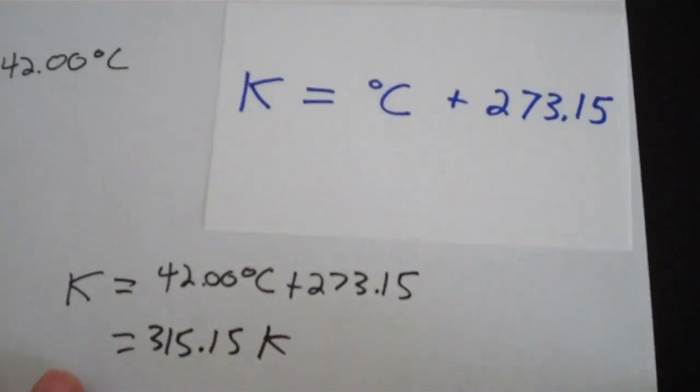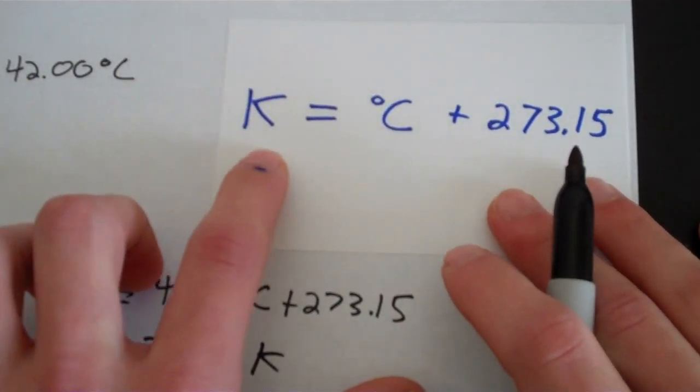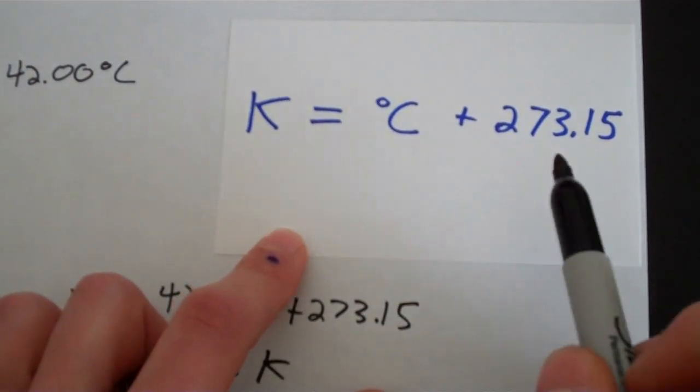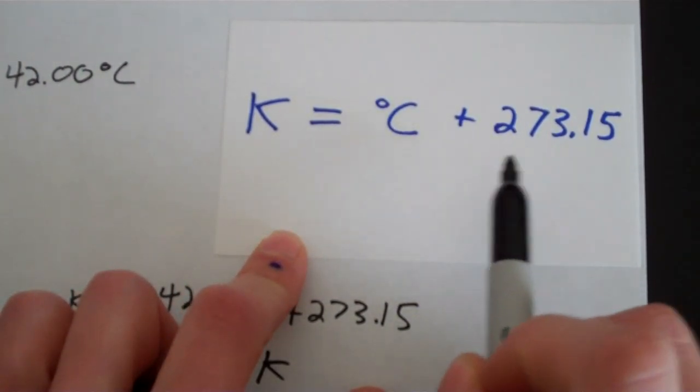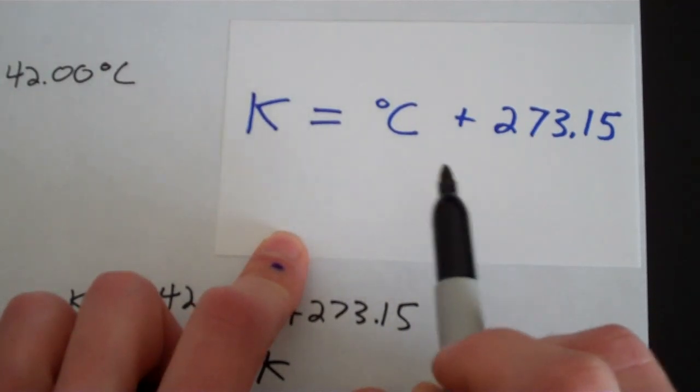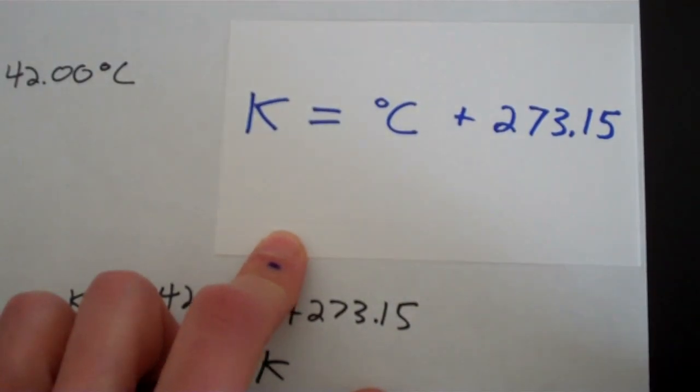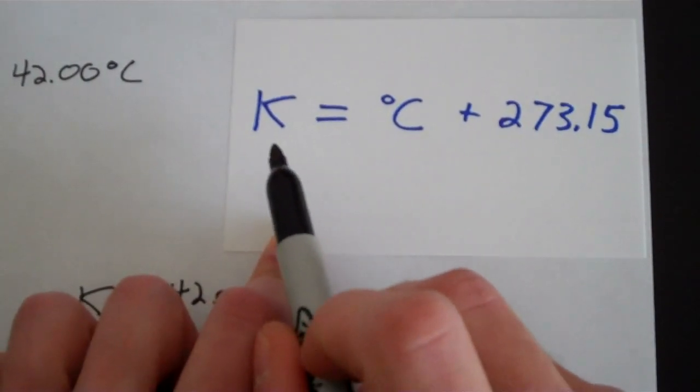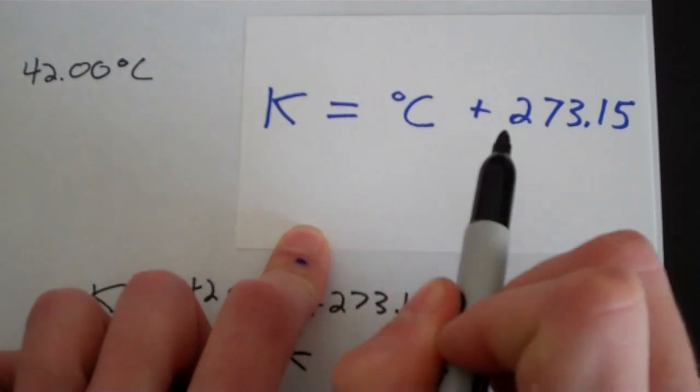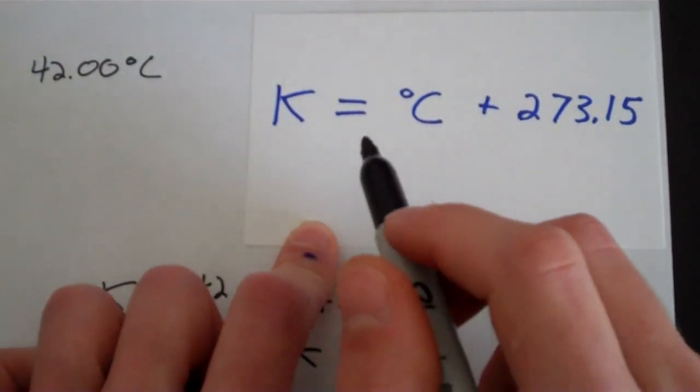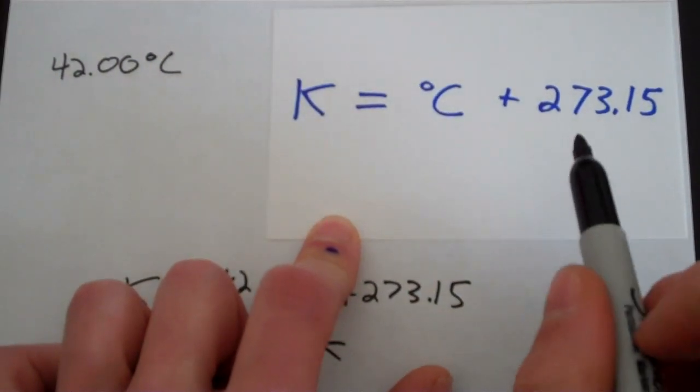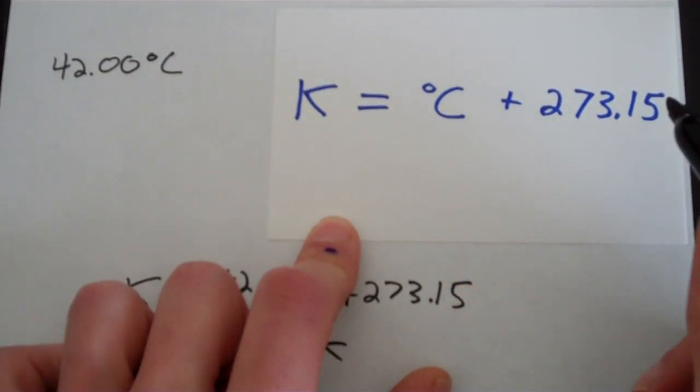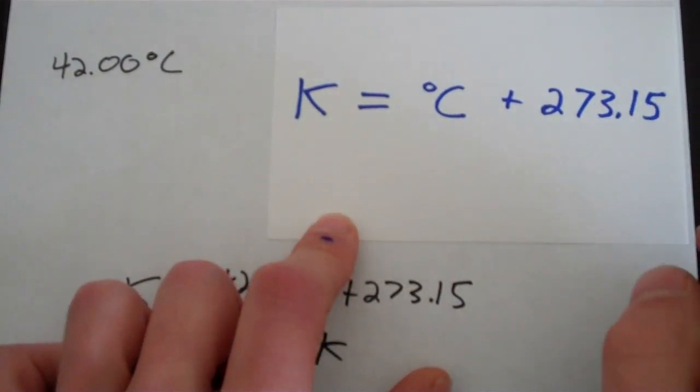One tip that I'd like to add is that Kelvins can never be negative. So if you have trouble trying to remember when to add 273.15 or when to subtract 273.15, the tip that I like to pass on to people is that Kelvins cannot be negative. So if you do this formula and you end up with a negative value of Kelvin, be suspicious that you may have messed up somewhere. Probably you should have added 273.15 but you subtracted it. So just watch out for that.